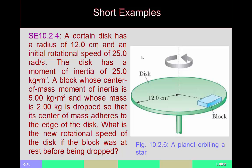Here is an example. A disc is spinning with an initial rotational speed of 25 radians per second, and the disc has a moment of inertia of 25 kilogram meters squared. A block with a total mass of 2 kilograms and a center-of-mass moment of inertia of 5 kilogram meters squared is dropped onto the disc. Assuming the block's center of mass lands on the edge of the disc and it sticks, what is the new rotational speed of the disc-and-block system?